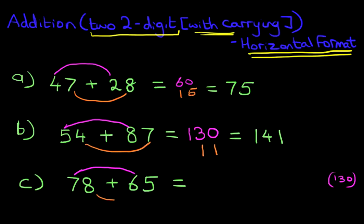Now calculate the units. Eight plus five. What is eight plus five? Eight plus five is 13. So now you should add the 13 to the 130. Don't forget, you've done 70 plus 60 is 130. Eight plus five is 13. 130 plus 13 is 143.